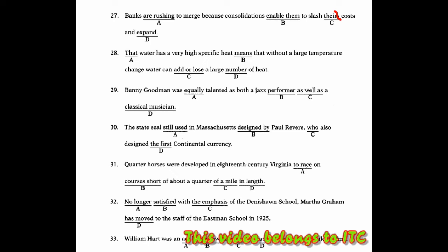Then number 28, that water has a very high specific heat means that without a large temperature change, water can add or lose a large amount of heat. For this part, the answer is amount. Why? Because amount is used for uncountable, meaning quantity for things that cannot be counted. While number means quantity, but for things that can be counted.